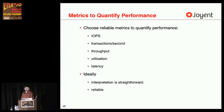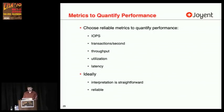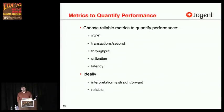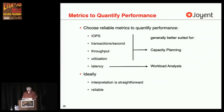Metrics to quantify performance: having just said it's really important to get these right, that there's typically a morass of performance issues out there — you need a good metric to find the ones that do matter. We can pick things that include IOPS (IO operations per second), transactions per second, throughput, utilization, and latency. Ideally the interpretation is going to be straightforward and reliable. Latency is particularly good for workload analysis. Other metrics like IOPS, transactions per second, throughput, and utilization are generally better suited for capacity planning.